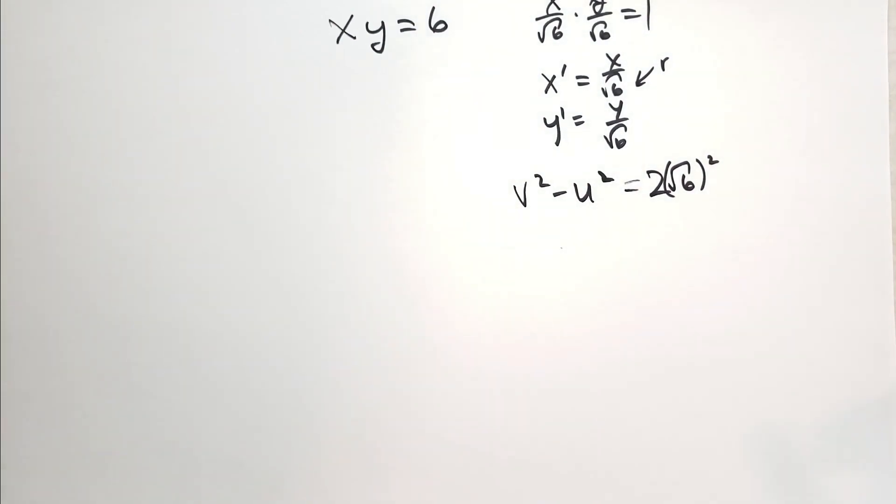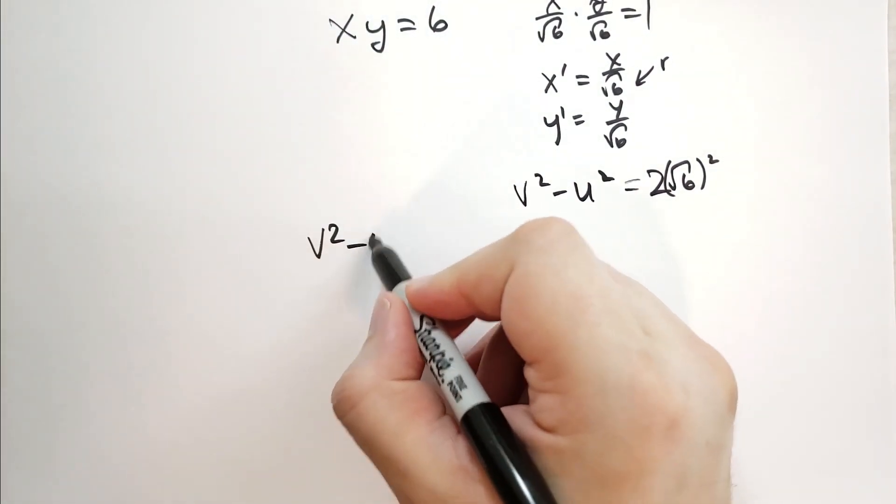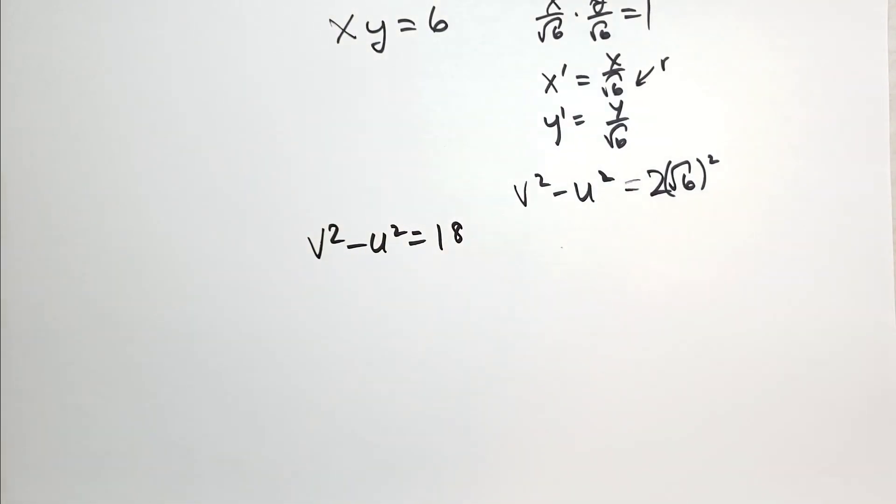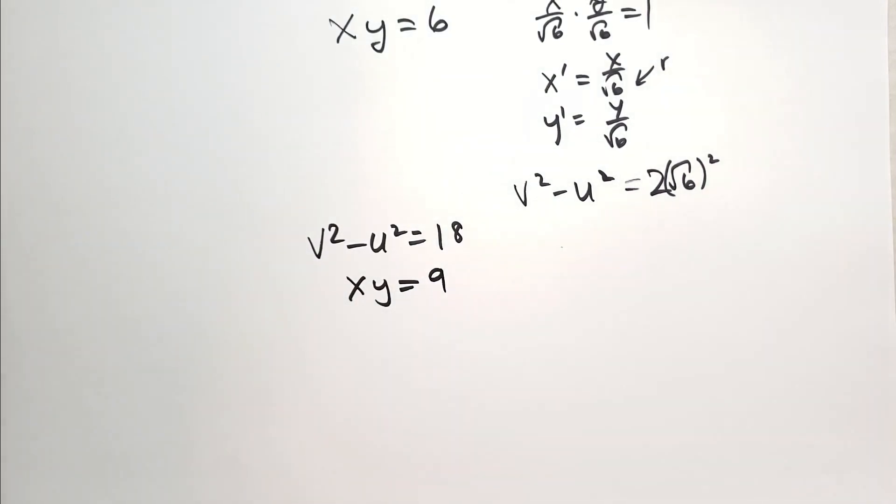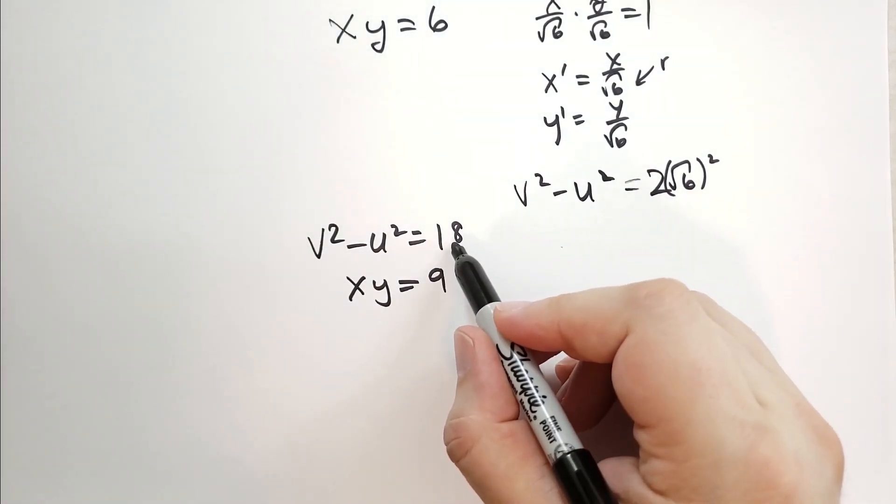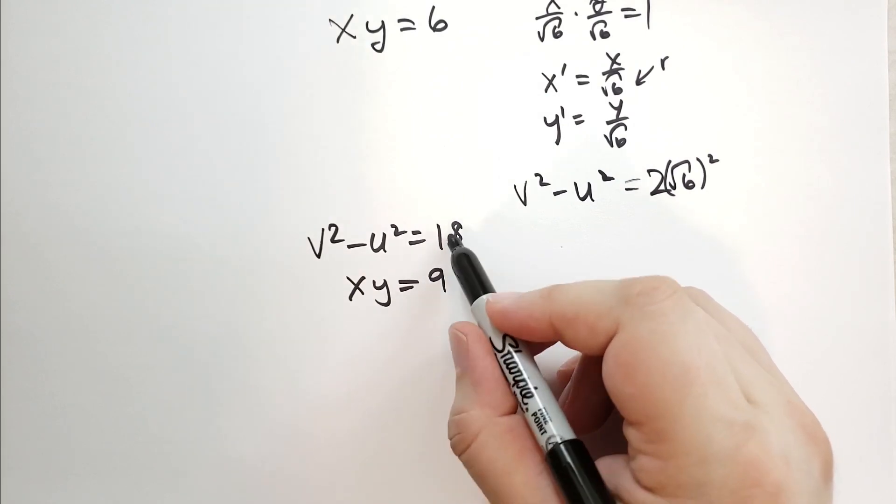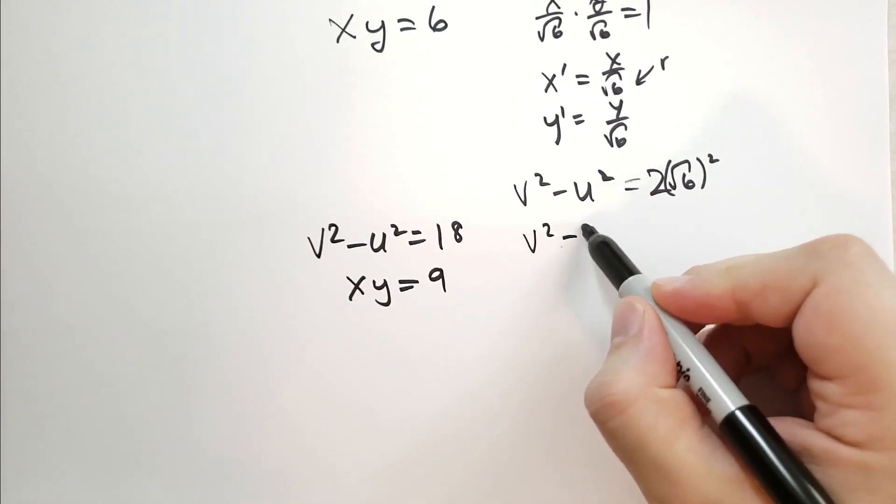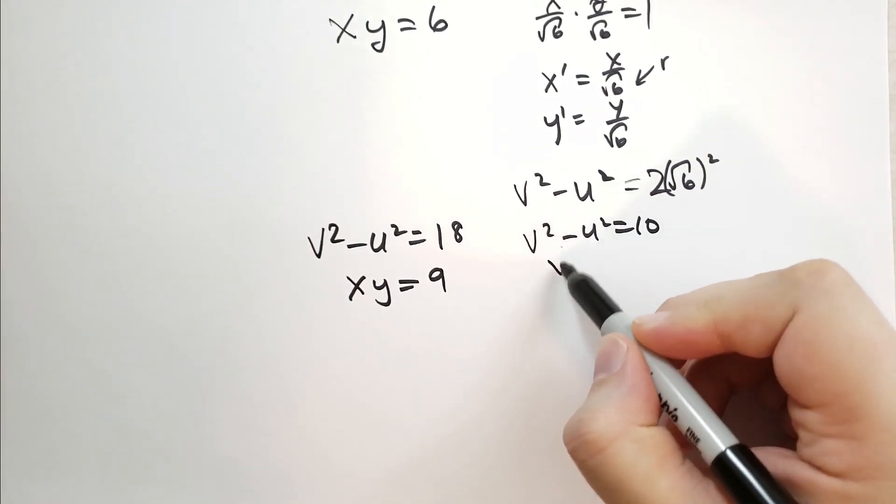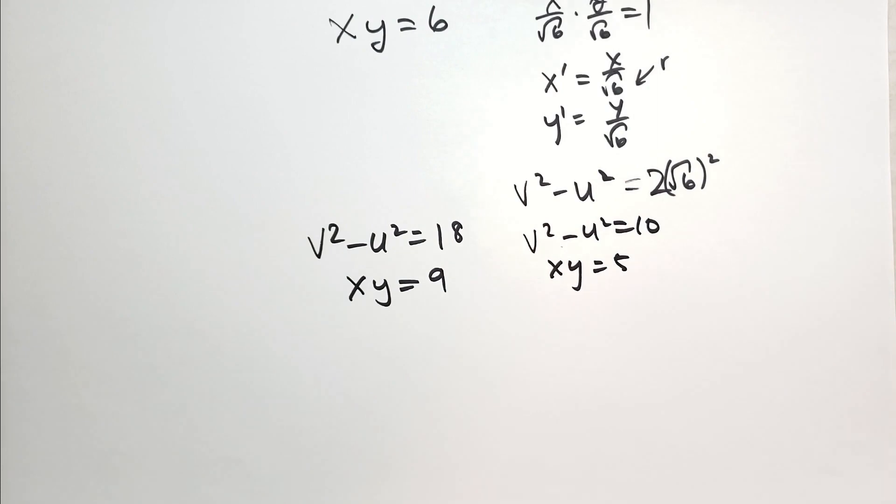And one more example. So we have v squared minus u squared is equal to 18. Let's say this is a rotation by pi over 4 of the hyperbola defined by the equation xy is equal to 9. So we're just taking this and we're dividing by 2 to get this one or taking that one by multiplying it by 2. The v squared minus u squared is equal to 10. That's just xy is equal to 5.